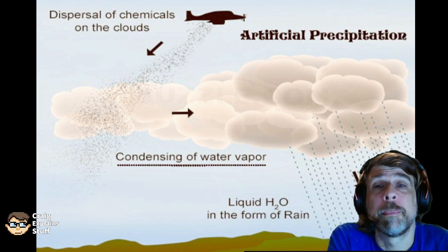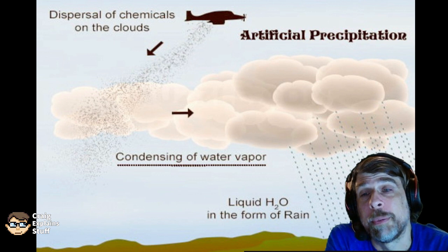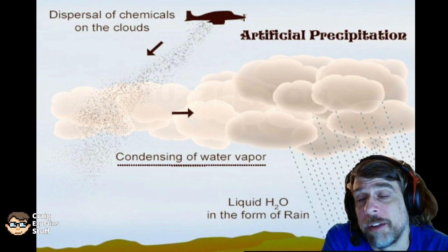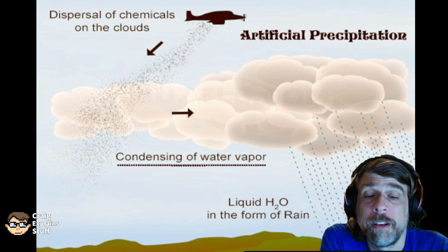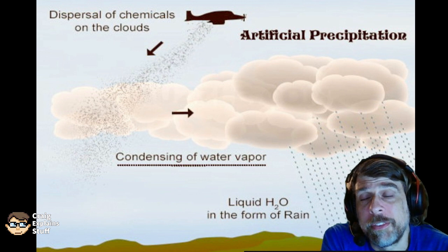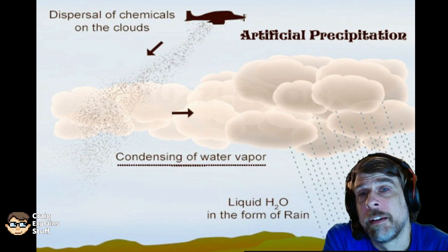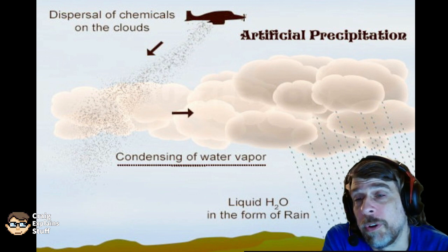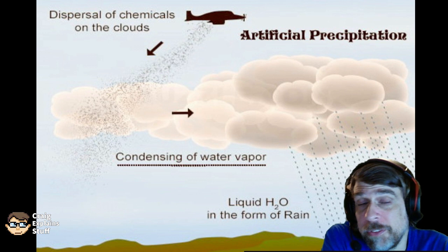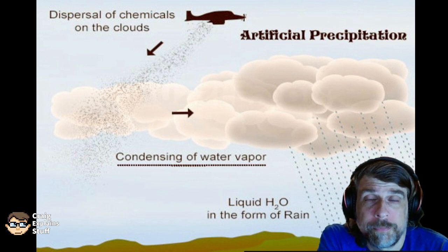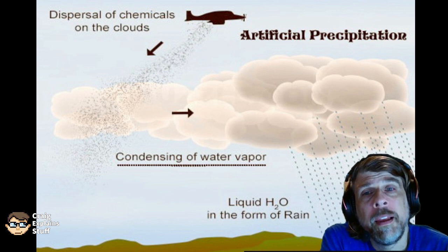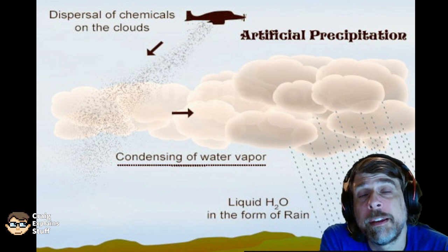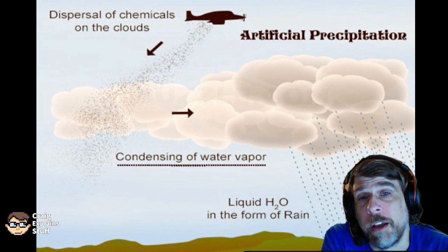The other two chemicals, silver iodide and potassium iodide, are officially classified as pollutants. You might think that dumping pollutants into the clouds is bad for the environment, but extensive studies done by California and Australia have indicated there is no noticeable effect from using either of these two chemicals — no noticeable change to any groundwater, soil, plants, or animals. However, in the United States, since they're still classified as pollutants, the EPA — the Environmental Protection Agency — carefully regulates cloud seeding under the Clean Water Act.